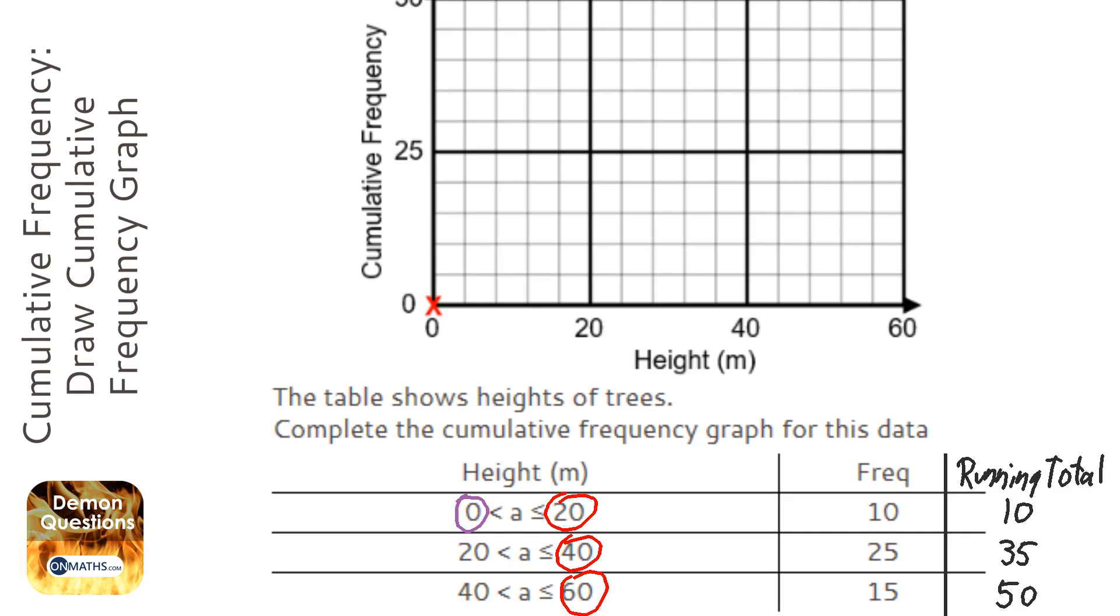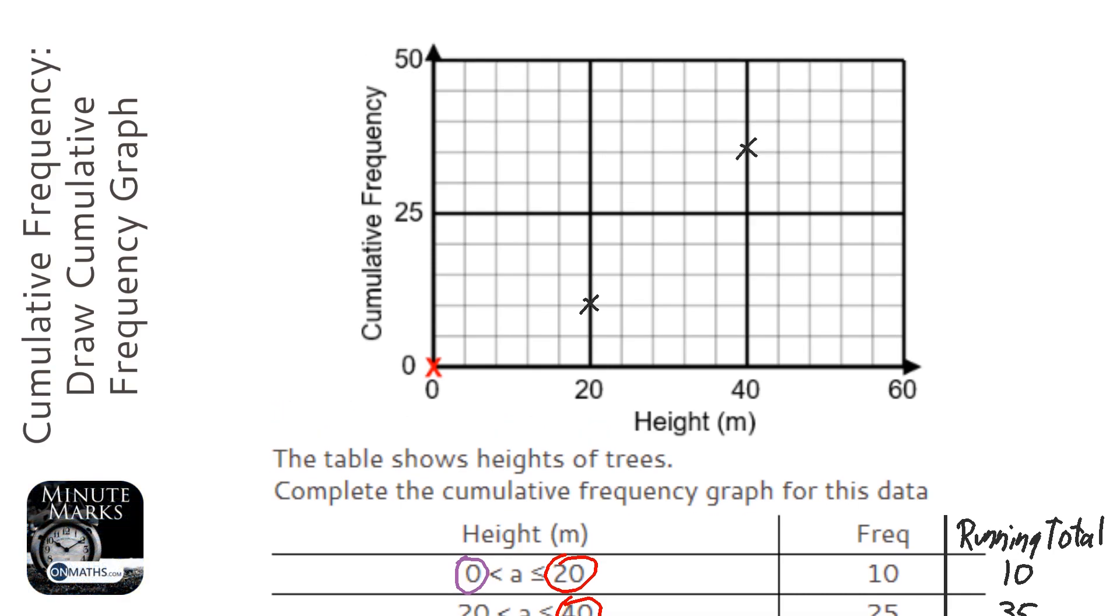So at 20, we're going to plot 10. Now this is going up in 5s, so 10 would be here. Then at 40, we're going to go to 35. And then at 60, we're going to go to 50.